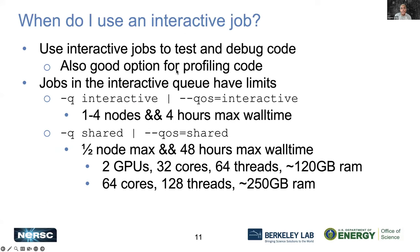You can use an interactive job for testing, debugging, and profiling by specifying the interactive queue with --qos interactive. For exclusive node access, you can use up to four nodes with a max wall clock time of four hours. For shared nodes, you have a half-node max with a 48-hour wall time limit — up to two GPUs, 32 cores, 64 threads, or roughly 128 gigabytes of RAM.